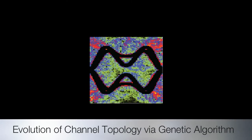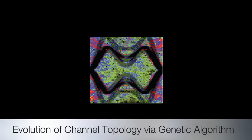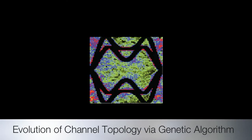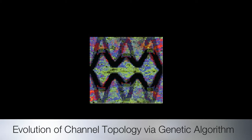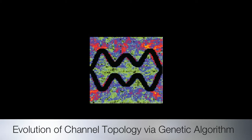Here we can see a randomly generated topology. Using a genetic algorithm, we can watch the topology evolve, yielding a more uniform shear stress distribution with progressing generations.